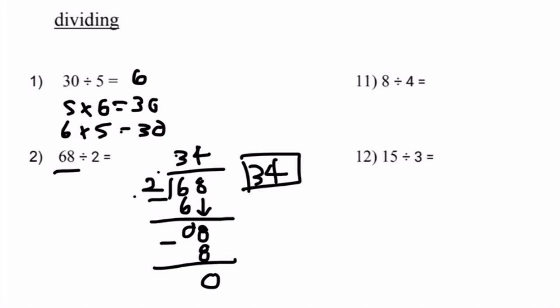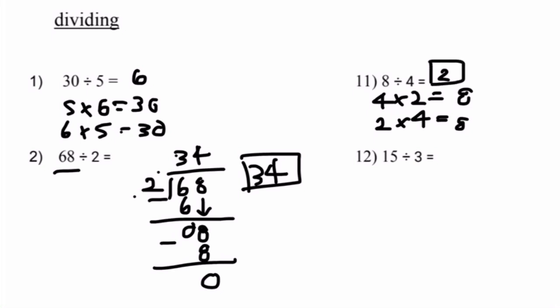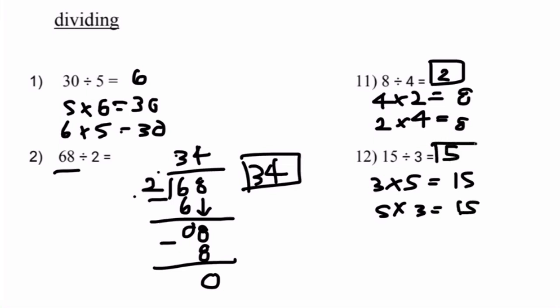Number 11: 8 divided by 4 equals what? We know that 4 times 2 equals 8, and 2 times 4 also equals 8. Therefore, we can infer that 8 divided by 4 equals 2. Number 12: 15 divided by 3. We know that 3 times 5 equals 15, and 5 times 3 equals 15. Therefore, 15 divided by 3 equals 5.